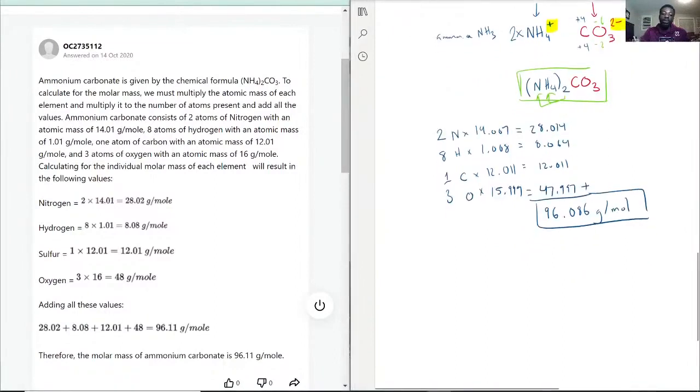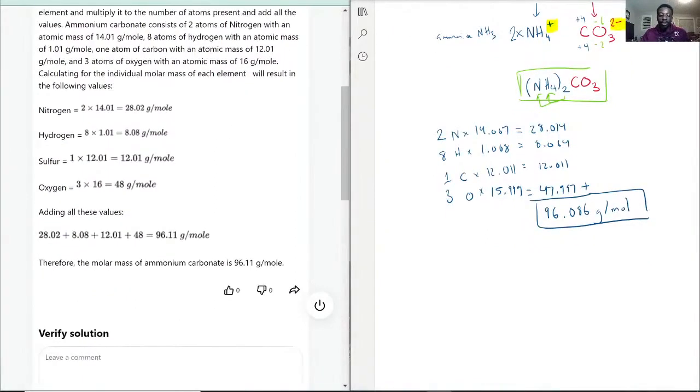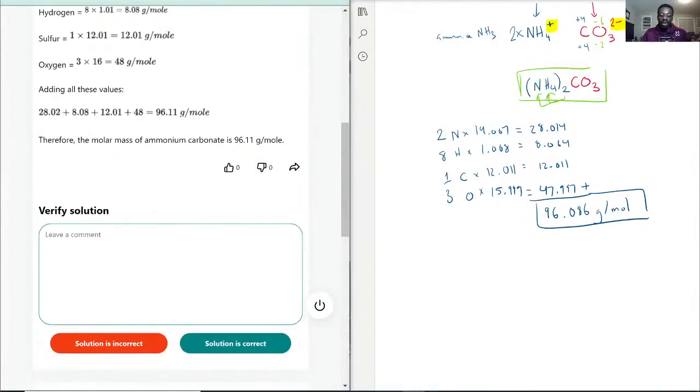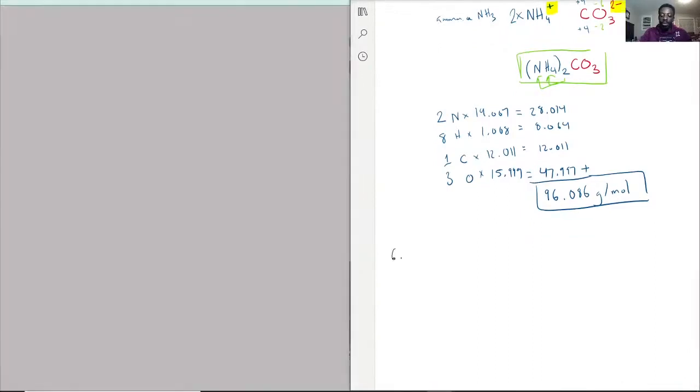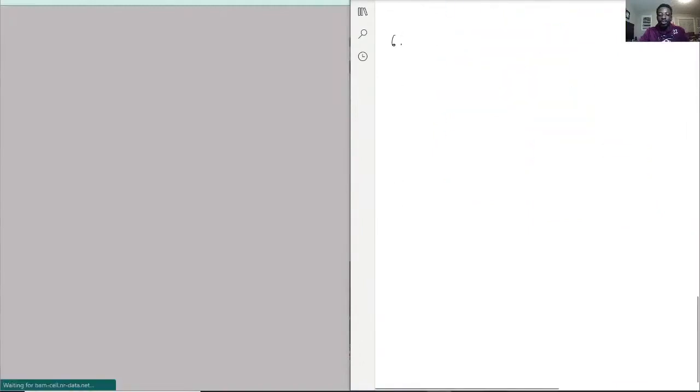Okay, so I would advise not looking up the numbers online if you've already been given a periodic table. If you have not been given a periodic table, then go with online, but just make sure you're always referring to the same periodic table just to keep your answers consistent. So with that being said, moving on to question six.